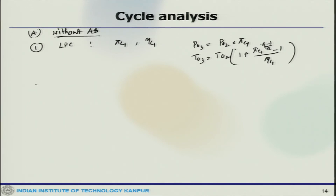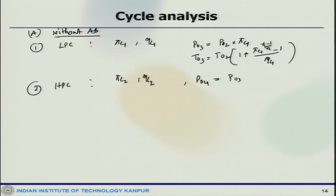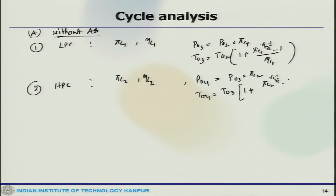At the second stage, the flow goes to the HPC (high pressure compressor) with pressure ratio pi_C2 and isentropic efficiency eta_C2. At the outlet of the HPC, P_04 equals P_03 times pi_C2, and T_04 equals T_03 times (1 plus (pi_C2 to the power (gamma_C minus 1) by gamma_C) minus 1) divided by eta_C2.